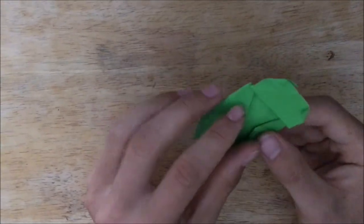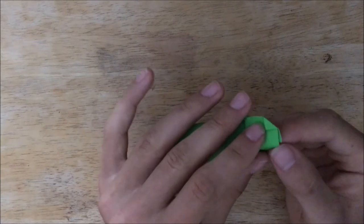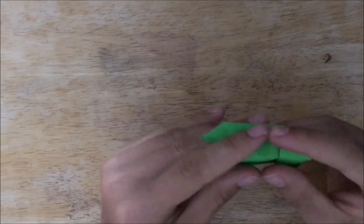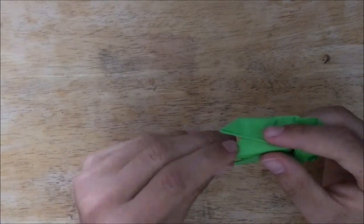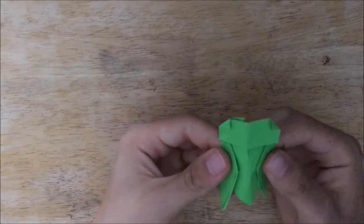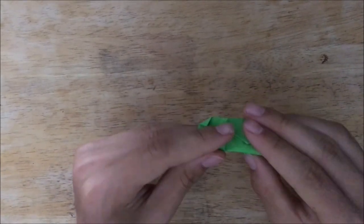And the last step will be to slightly fold the whole cicada in half. Don't fold all the way down, just slightly do it. And you are done.